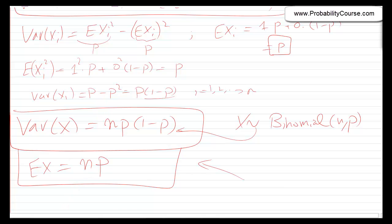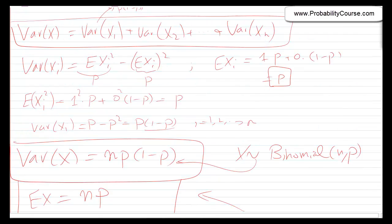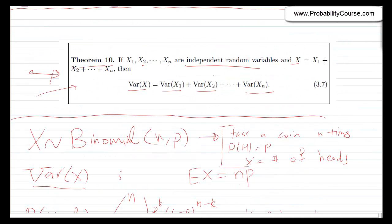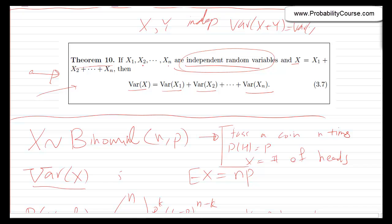The key insight from this example was that we could use the additivity of variance for independent random variables: if x and y are independent, then Var(x + y) = Var(x) + Var(y).